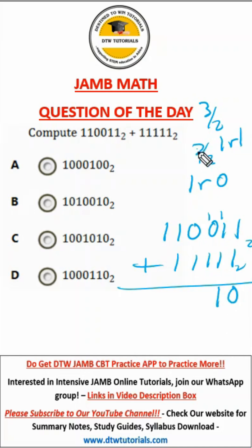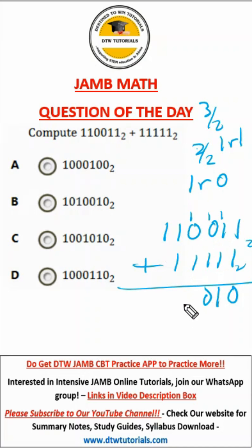1 plus 1 plus 1 is 3. So we have 3 divided by 2, that gives us a 1 remainder 1. So we drop the remainder and carry the 1. 1 plus 1 is also 2, and when we divide we have a remainder 0 — carry another 1. 1 plus 1 is 2, divide by 2, remainder 0, carry another 1.